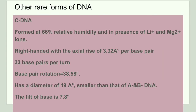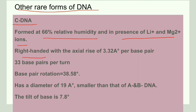C-DNA is a rare form formed under 66% relative humidity in the presence of lithium and magnesium ions. It is also right-handed and has 9 base pairs per turn. The base pair rotation is 38.5° and the axial rise is 3.32 Å per base pair. The diameter is 19 Å, and the rise per turn is 7.8 Å. C-DNA is much smaller than both A-DNA and B-DNA.